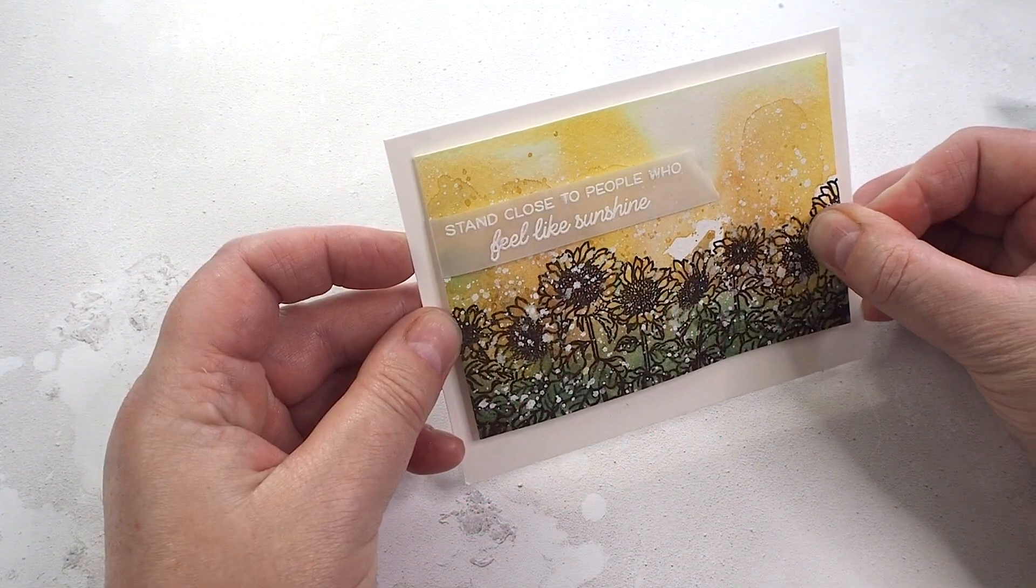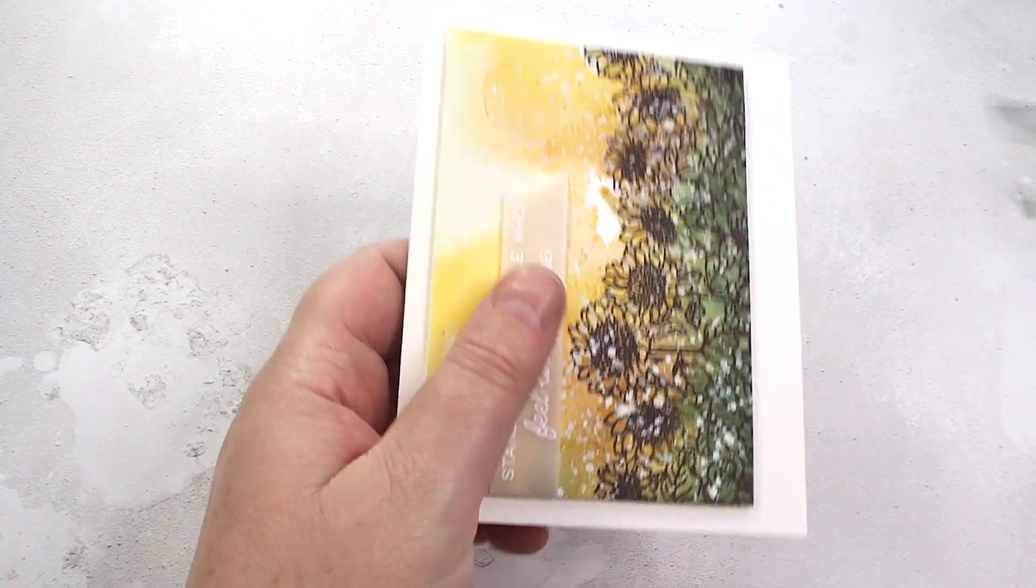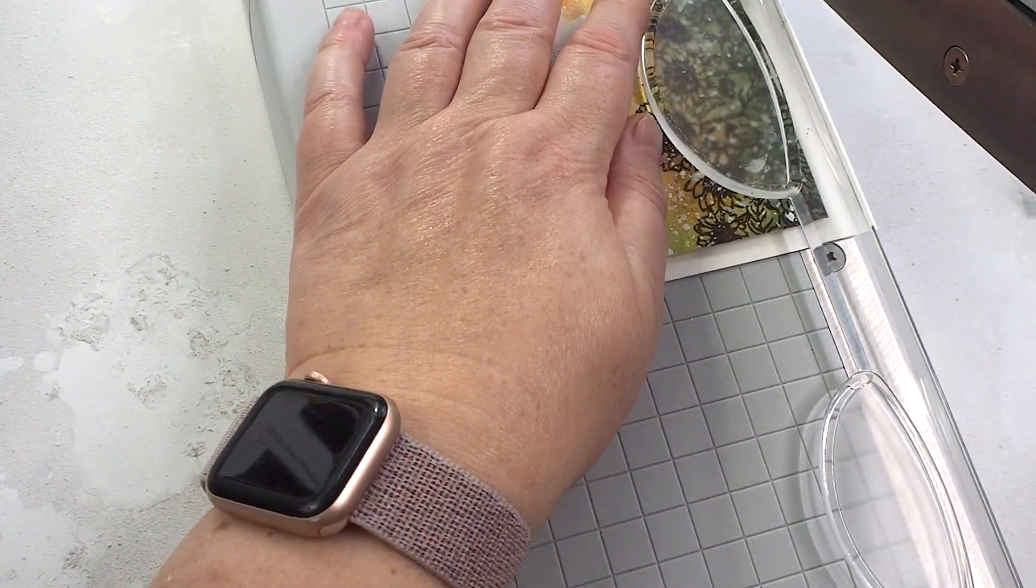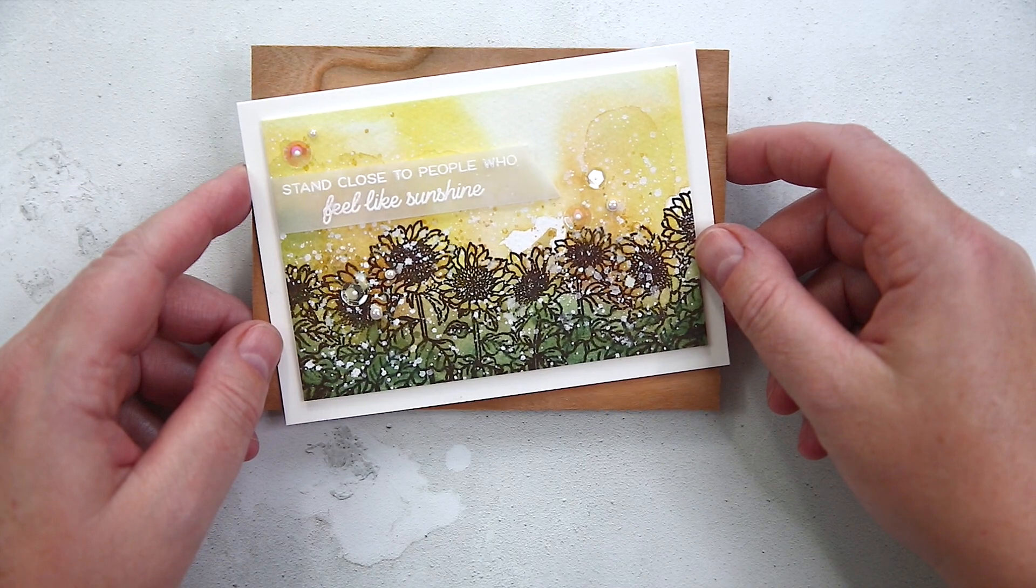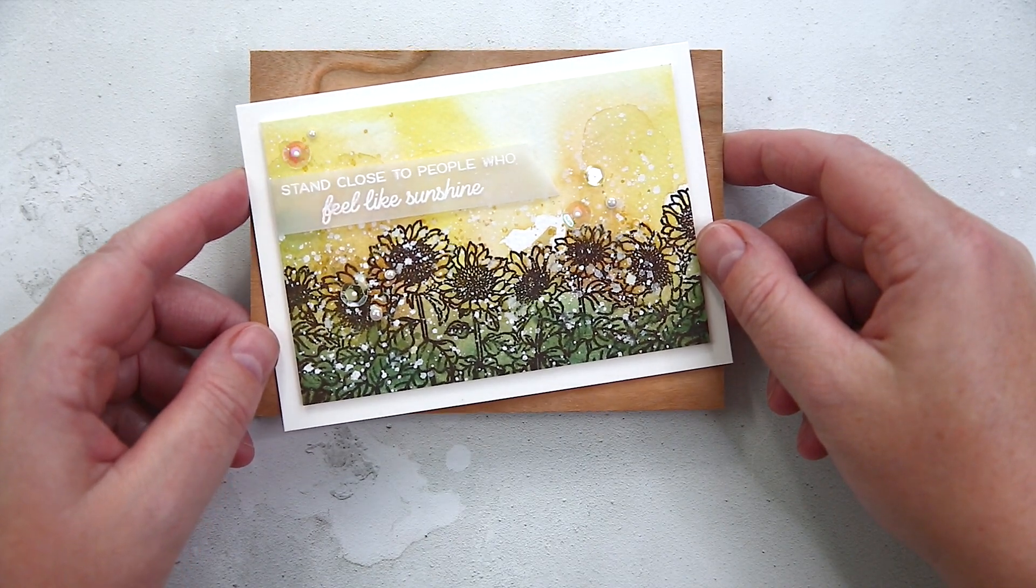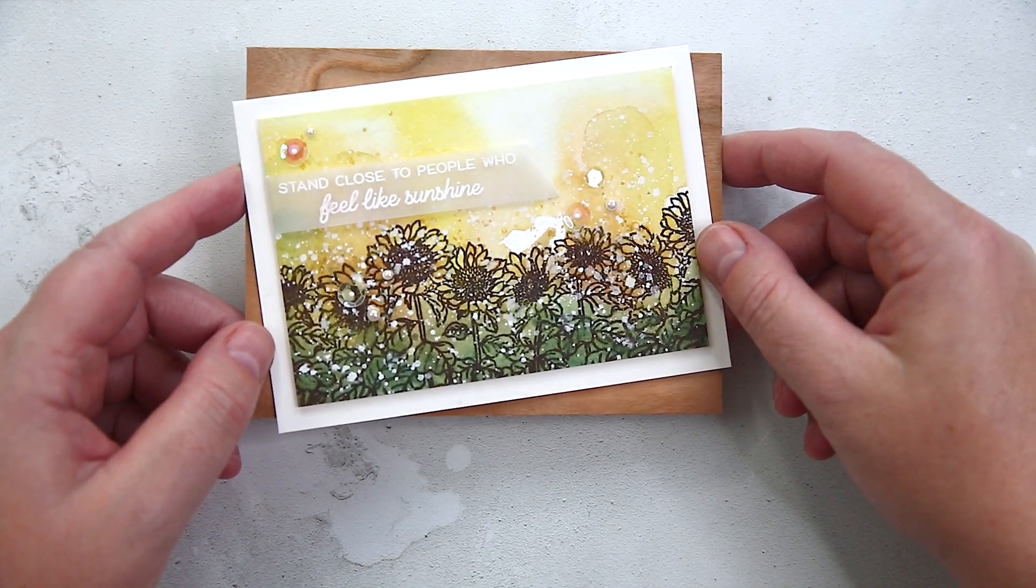I added foam tape to the back of the panel and adhered to the card front. I trimmed the card front to give an equal border for each edge and then finished off with a few sequins and pearls. I paired the card with an envelope, and that's it for this simple card.